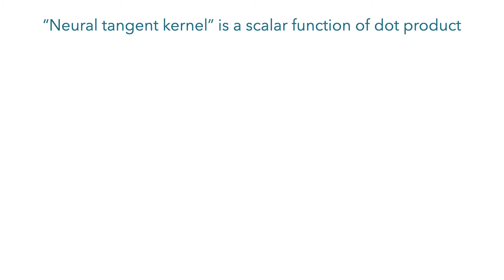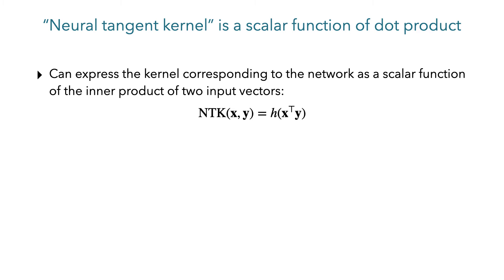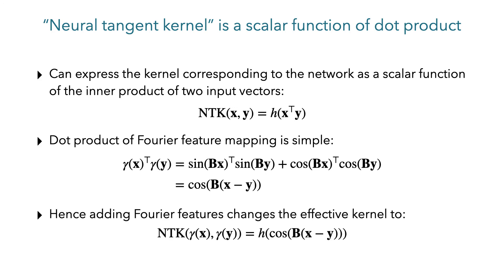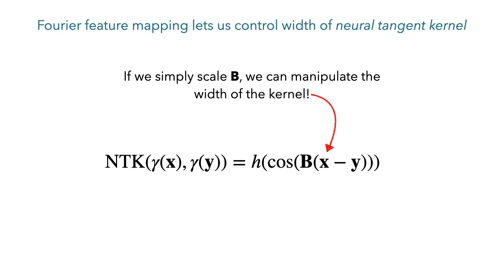We can justify theoretically why this allows us to learn higher frequency functions using neural tangent kernel theory. For a standard fully connected MLP, the corresponding neural tangent kernel can be expressed as a scalar function of the inner product of any two input points. A Fourier feature mapping has a complementary property where the dot product of two feature vectors is a stationary function of the two original coordinate points x and y — meaning it is shift invariant. Combining these two facts, the Fourier feature mapping makes the NTK into a stationary kernel, and it gives us a direct way to manipulate the width of that kernel just by changing the scale of B.